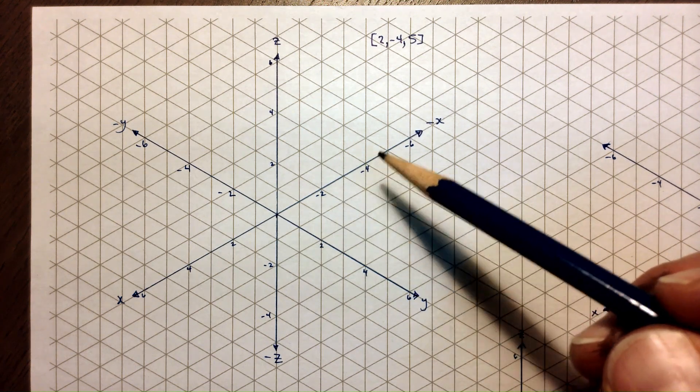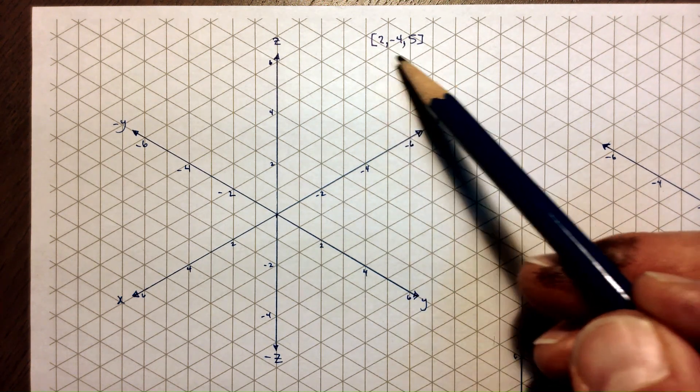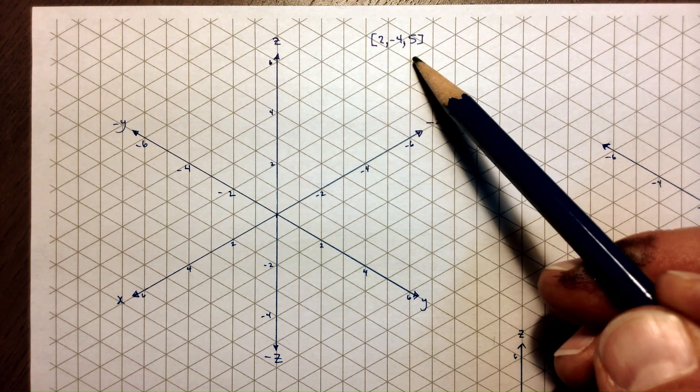We're going to use isometric grid paper here to graph vectors in three dimensions using their algebraic or Cartesian coordinates.